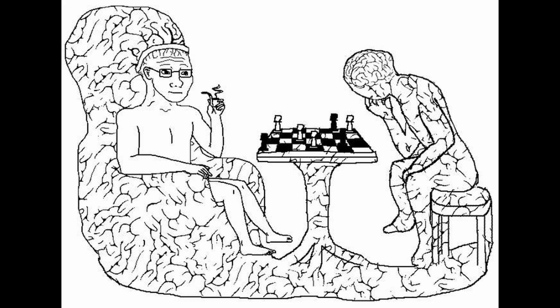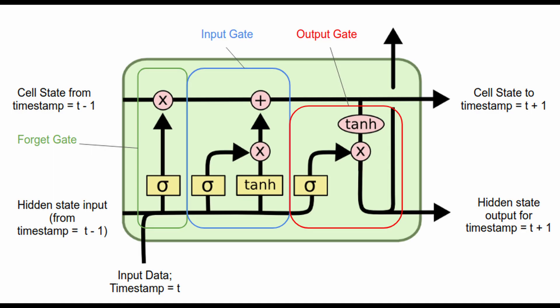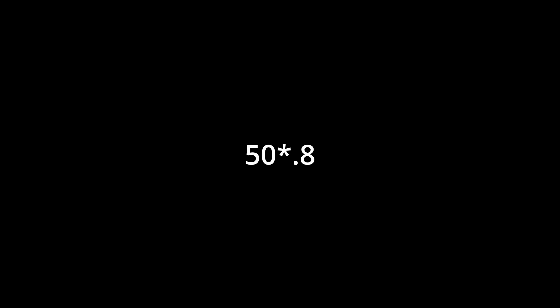Now that we have tokens, it's time to talk about the model. We're using an LSTM, which is a specialized type of recurrent neural network that is better at remembering long-term dependencies in sequential data. Basically, it stores a cell state where it calculates what to remember, what it should add, and what it should focus on. Here's an example: let's say you have a number — it's 50 — and the forget gate tells you to only keep 80% of that number, so it would be 40.